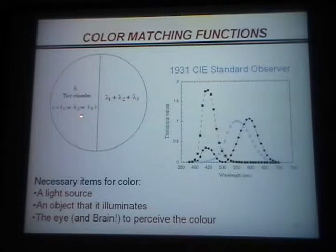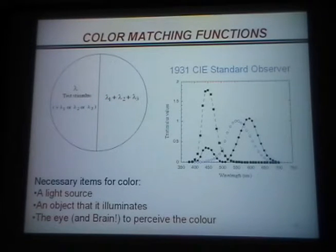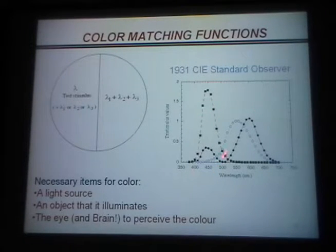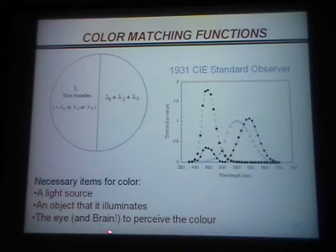A necessary item for color then: you need a light source, an object that it illuminates, the eye, and the brain to perceive the color. The procedure for calculating the tri-stimulus values of a prescribed color is: you take the spectrum of the light source, what the object does — the reflectance, transmission, scattering, etc. — and then the standard observer function. These tri-stimulus values X, Y, Z are the integral of the power spectrum times the reflectance times the standard observer function.